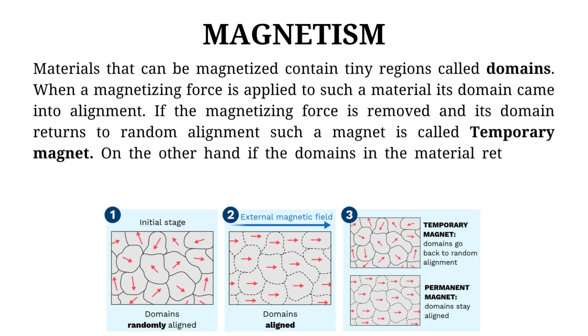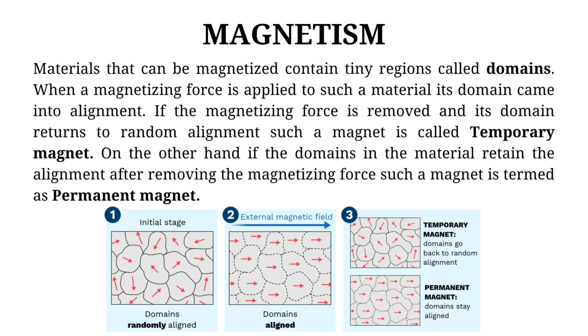On the other hand if the domains in the material retain the alignment after removing the magnetizing force such a magnet is termed as permanent magnet.